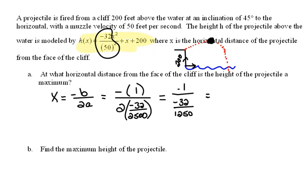And then when we simplify this, we would get 39.06 feet. So 39.06 feet out from the cliff, our projectile is going to have a maximum height.